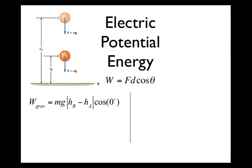Another thing to recall from Physics 1 is that by definition, the work done by gravity on an object equals the negative of the change in the gravitational potential energy of the system. We use U for gravitational potential energy. This is a fundamental and useful definition: the work done by a gravitational force equals the negative of the change in gravitational potential energy of the system.